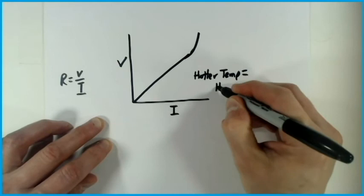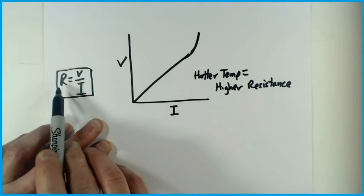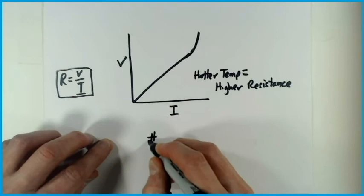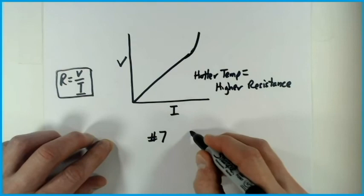Also keep in mind Ohm's law: R = V/I. This is important for problem number seven — it asks you to calculate resistance and gives you a length, so students automatically start using the resistivity equation R = ρL/A. That's not correct. You want to use Ohm's law for problem number seven.